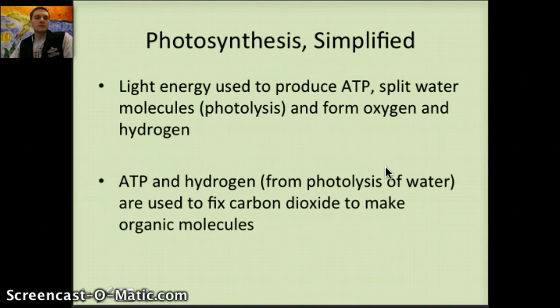ATP and hydrogen from the breaking of water are used to fix carbon dioxide to make organic compounds or organic molecules. So that ATP that's produced during the first part of photosynthesis and hydrogen is used to convert CO2 into an actual sugar molecule that can be used or an organic compound.